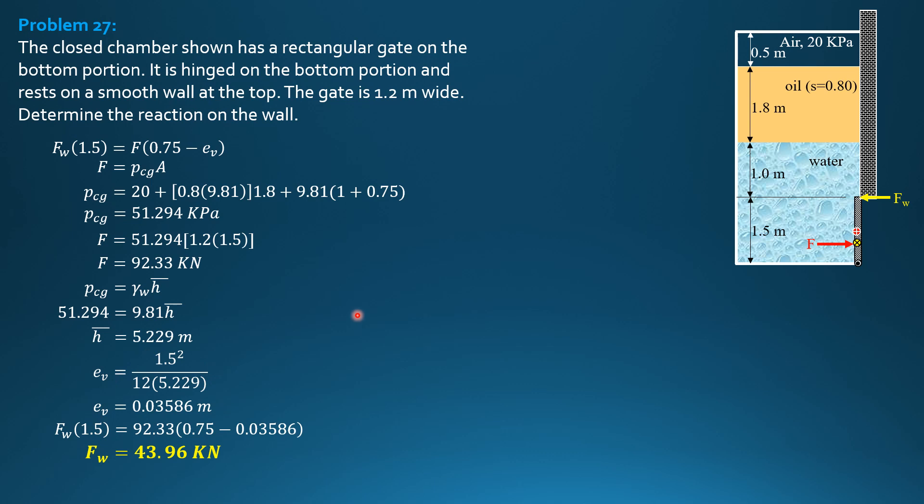I like this solution because I don't need to draw a pressure diagram anymore. But if you don't like, I'll give you another solution. Let's compute for, let's use the pressure diagram. Let's compute for the pressure at the top of the gate and the bottom of the gate, similar to problem example 26.